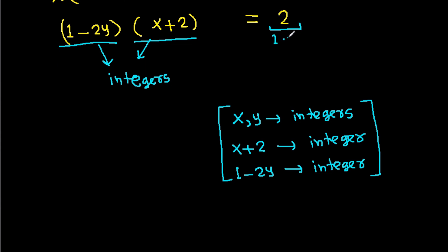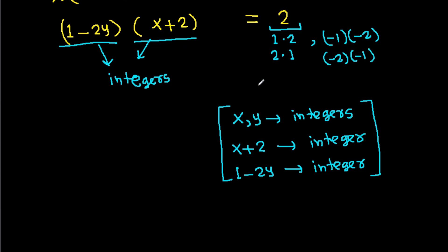Since 2 is a product of two integers, the possible cases are: 1 times 2, 2 times 1, minus 1 times minus 2, and minus 2 times minus 1. In case 1, (1 minus 2y) can be 1.